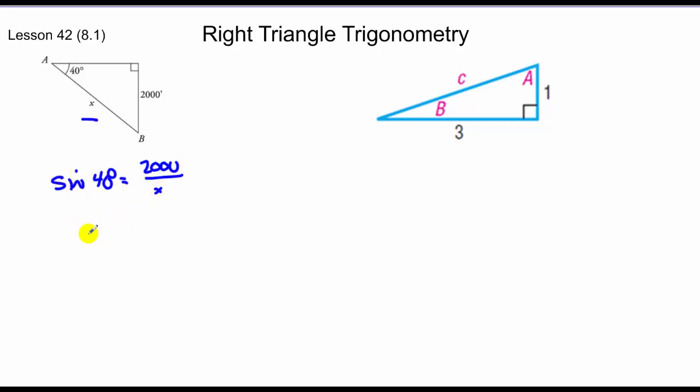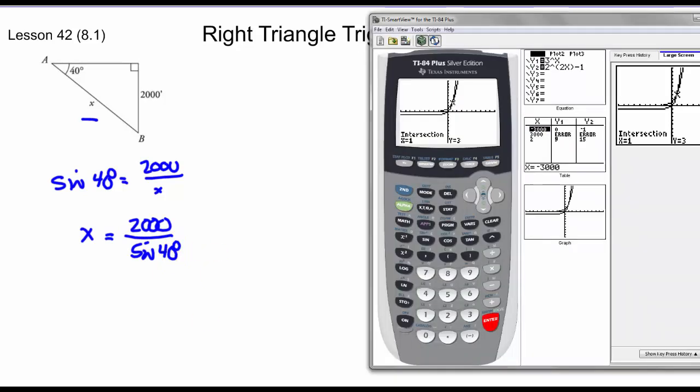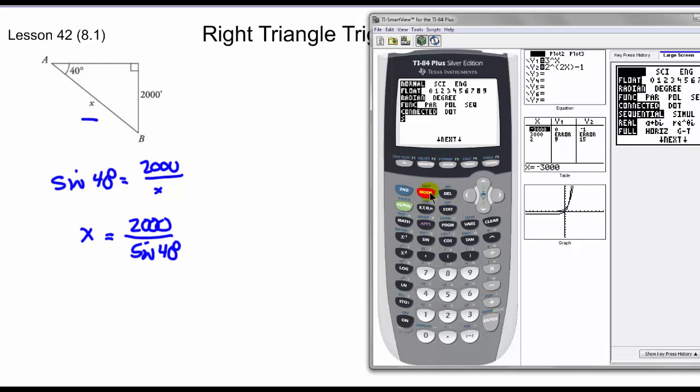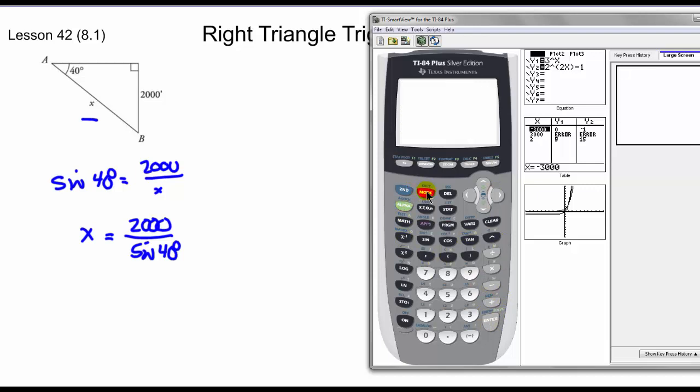We're going to multiply by x and divide by sine of 40. So x is equal to 2,000 over the sine of 40 degrees. Make sure now that your calculator is in degree mode. So we'll go to mode, notice we're in radian, go over to degrees. You're going to have to be conscious of whether it changes or not. Take 2,000 divide that by the sine of 40.